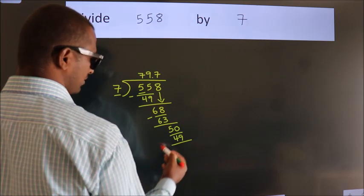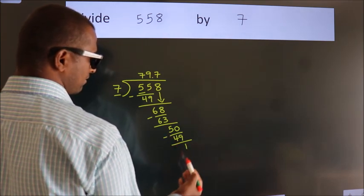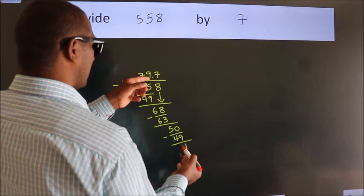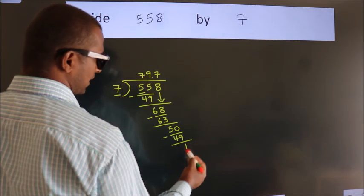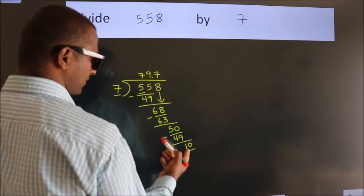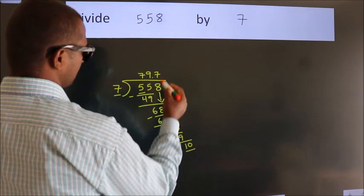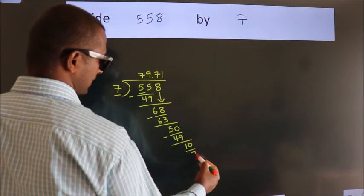Now we subtract. We get 1. After this we already have the decimal, so directly take 0. So 10. A number close to 10 in 7 table is 7 ones, 7.